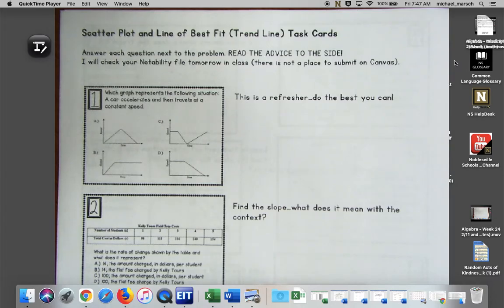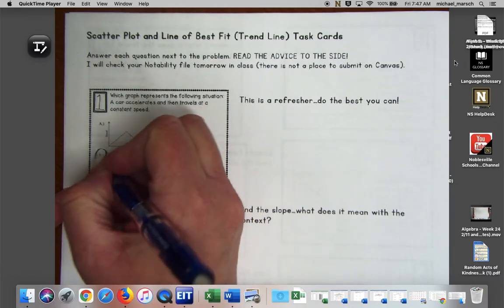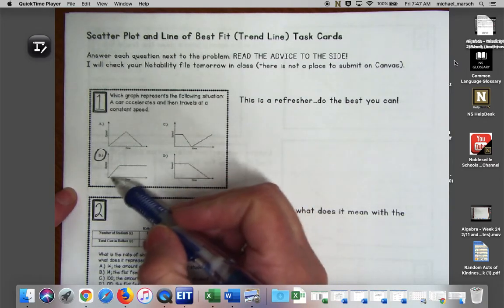Number one says which graph represents the following situation: a car accelerates then travels at a constant speed. Hopefully you chose B for this because you can see that it accelerates and then it's at a constant speed over time.